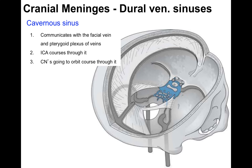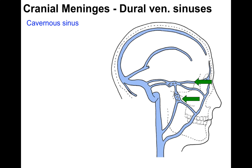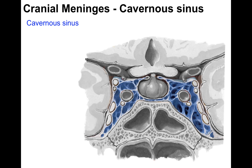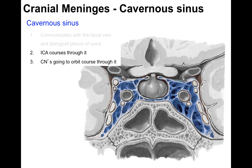The cavernous sinus is clinically significant. In the lateral illustration, a green arrow shows the communication vein to the facial vein outside the orbit, and another arrow shows the pterygoid plexus of veins in the oral cavity. Infection can spread via these connections into the cavernous sinus. In a coronal section through the sphenoid bone, everything in blue is the cavernous sinus, with the internal carotid artery coursing through it and cranial nerves traveling to the orbit coursing through it.